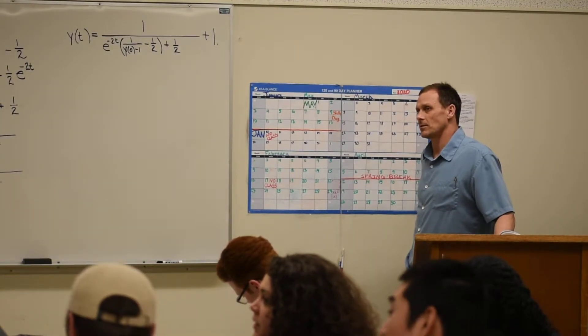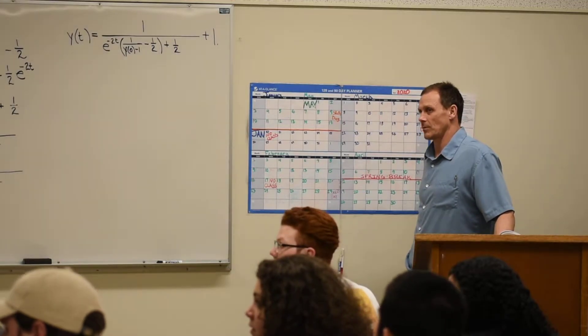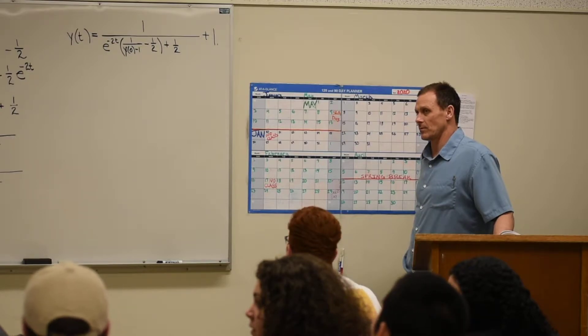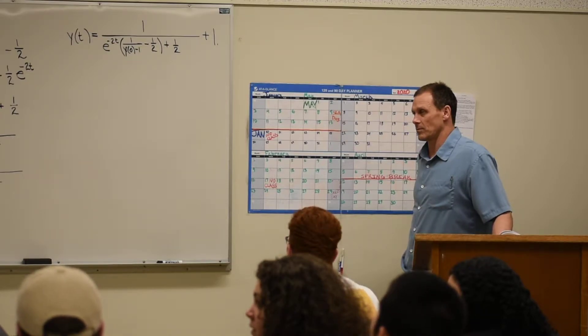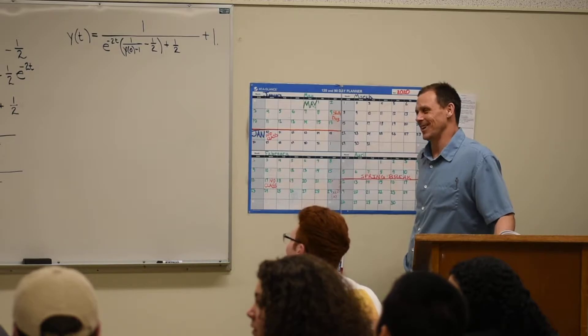Does D U equal D Y? If, for instance, those didn't equal each other, would we have to do a derivative of D with respect to U and then a derivative of U with respect to Y and then a derivative of Y with respect to T? Yeah, we're not going to get any of that involved. Yeah, that would be a good idea.